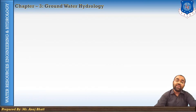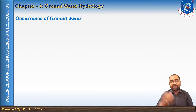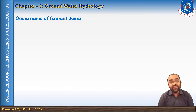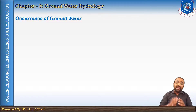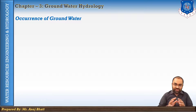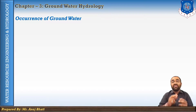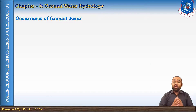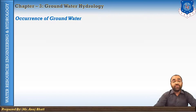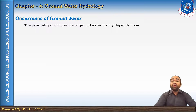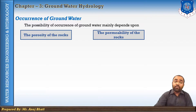Regarding the occurrence of groundwater, rainfall that percolates below the ground surface passes through the voids of rocks and joins the water table. These voids are generally interconnected, permitting the movement of groundwater. In some rocks they may be isolated, preventing movement of water between interstices. The mode of occurrence of groundwater therefore depends mainly upon the type of formation and the geology of that particular area. The possibility of occurrence depends upon two major geological features: porosity and permeability.